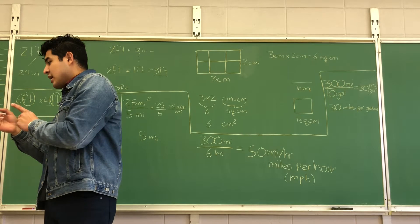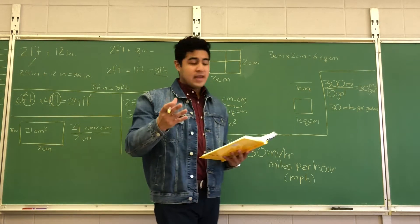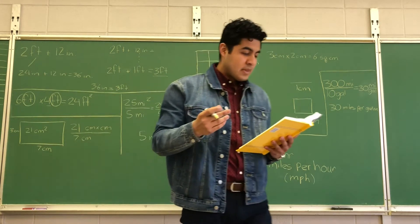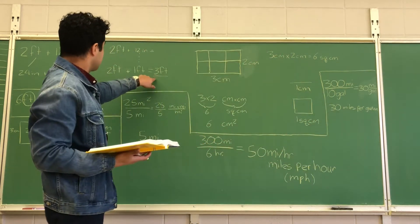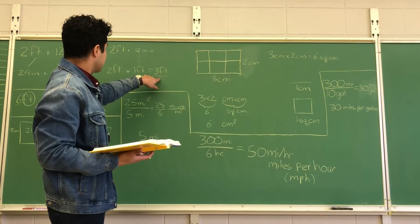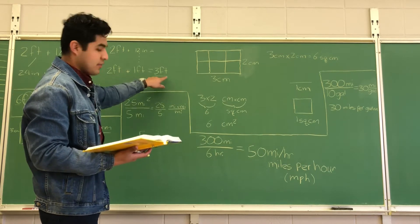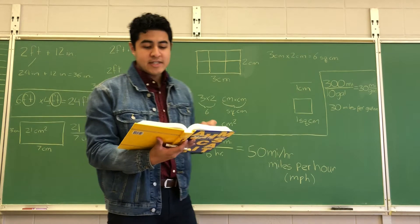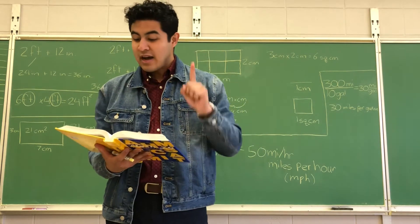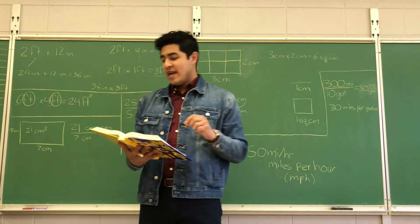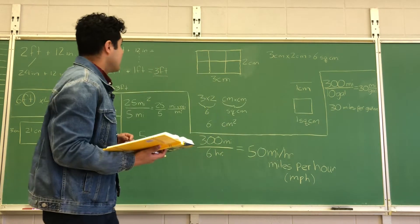Notice that the units of the sum in Example 1 are the same as the units of the addends — the units don't change when we add or subtract measurements. However, units do change when we multiply or divide measurements.